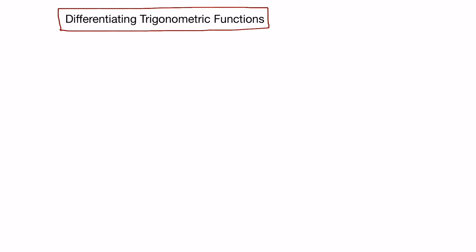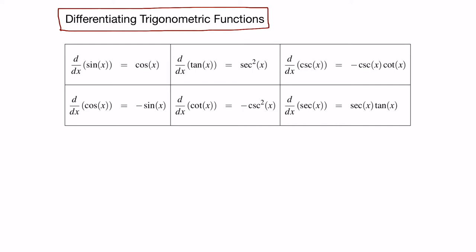Let's look at how to differentiate trigonometric functions. To start, let's bring in the table of already worked out trig derivatives. We won't bother proving these, but let's take a look quickly at the table. We see that the derivative of sine is cosine, and the derivative of cosine is negative sine, etc.